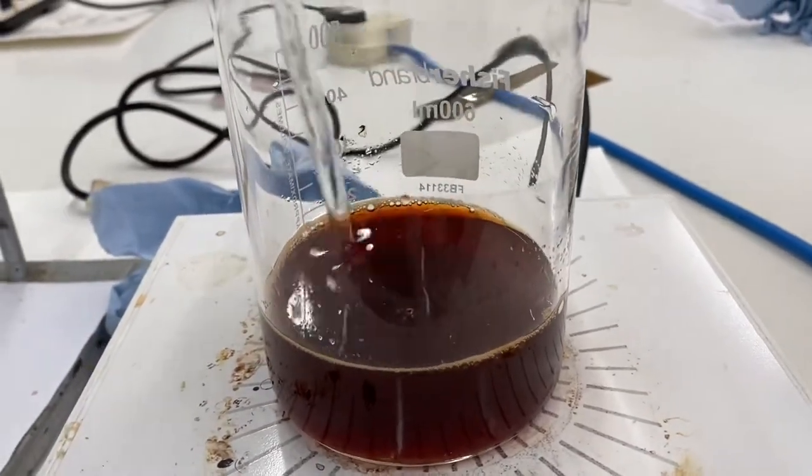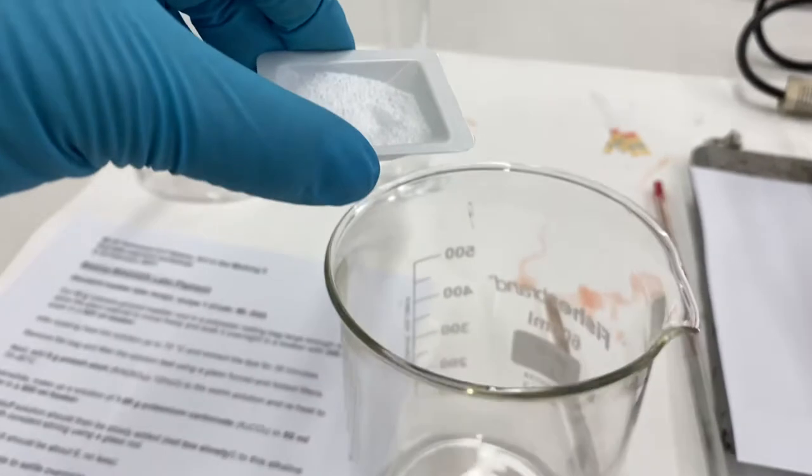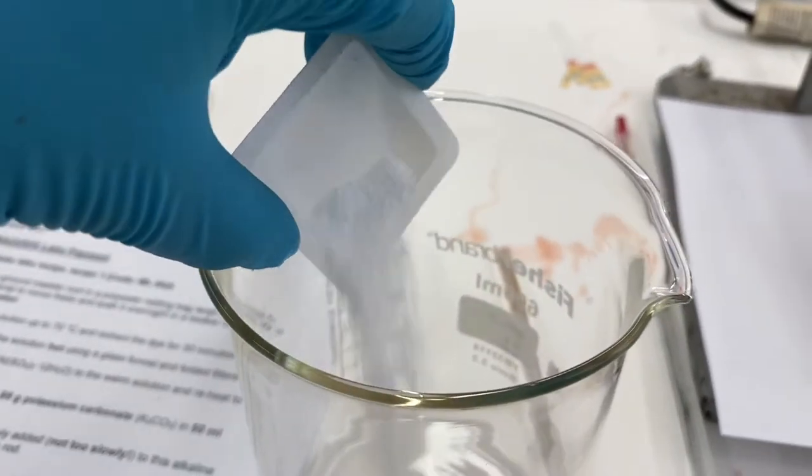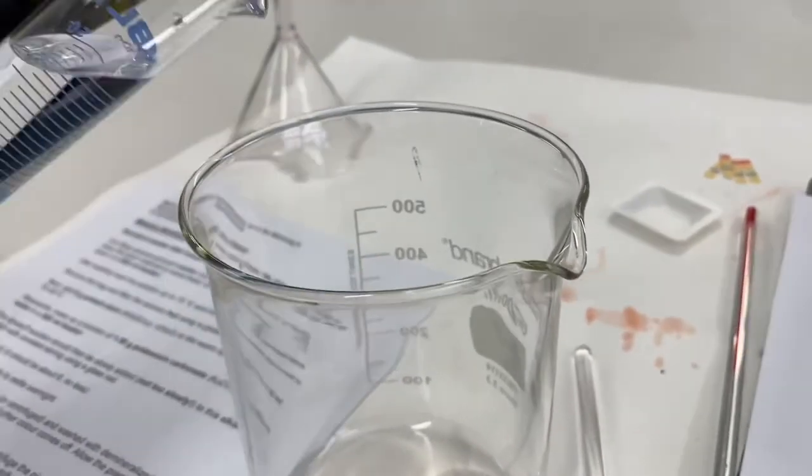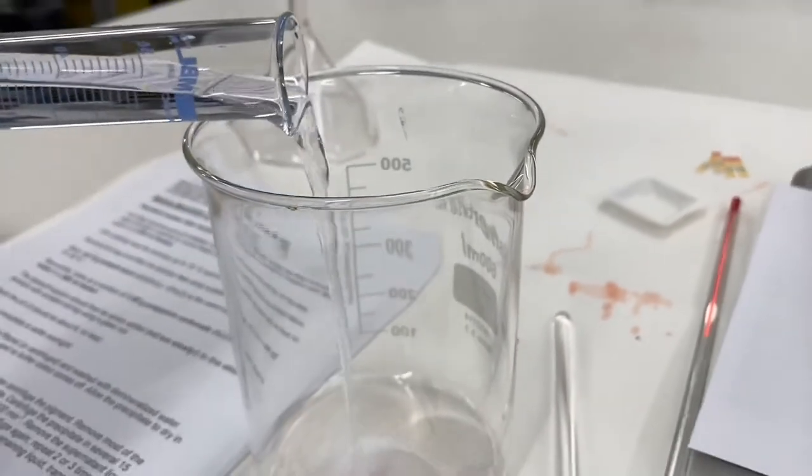While this reheats we add 1.88 grams of potassium carbonate to 50 milliliters of water in another 500 milliliter beaker. This will eventually be added to our dye solution.